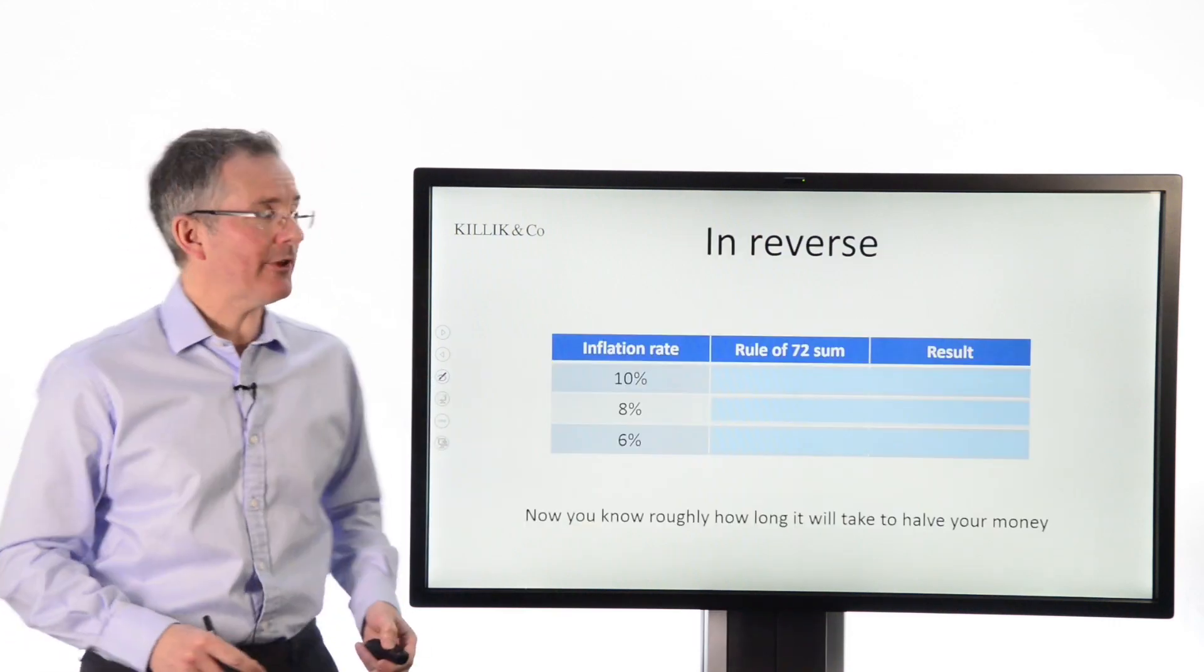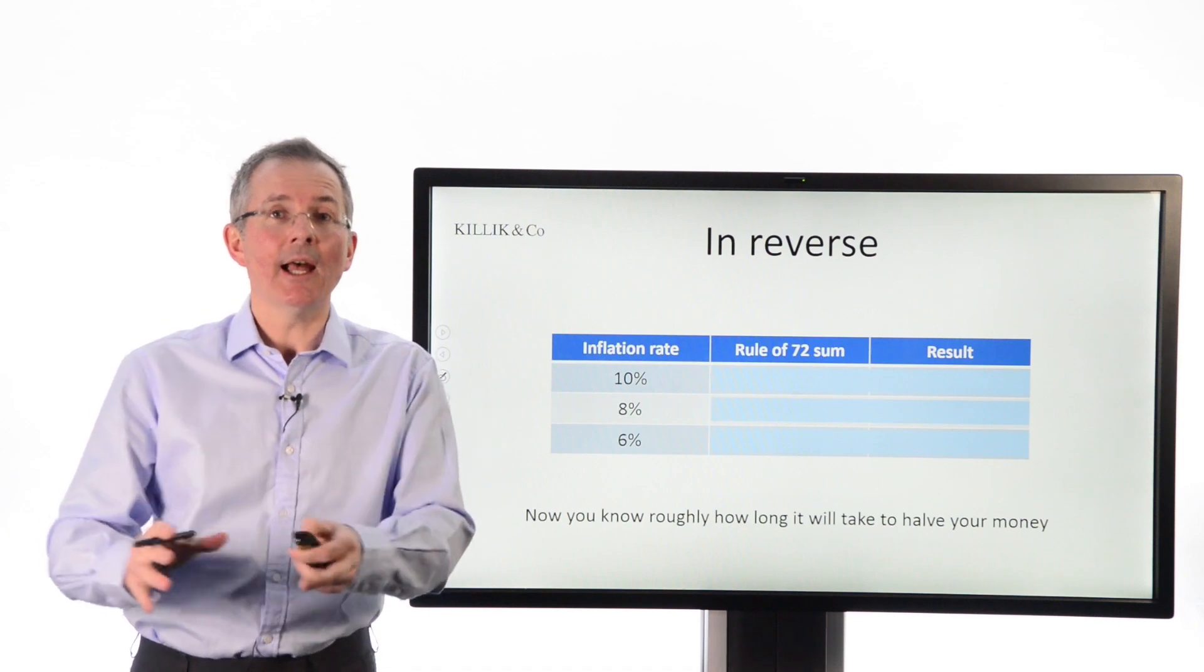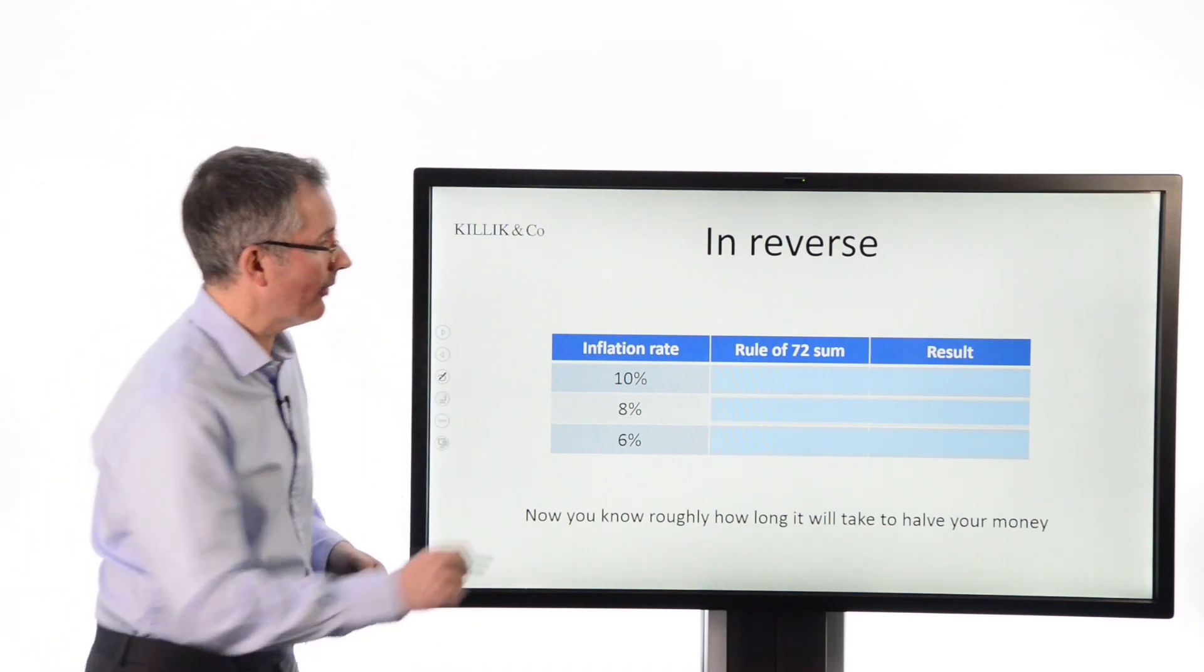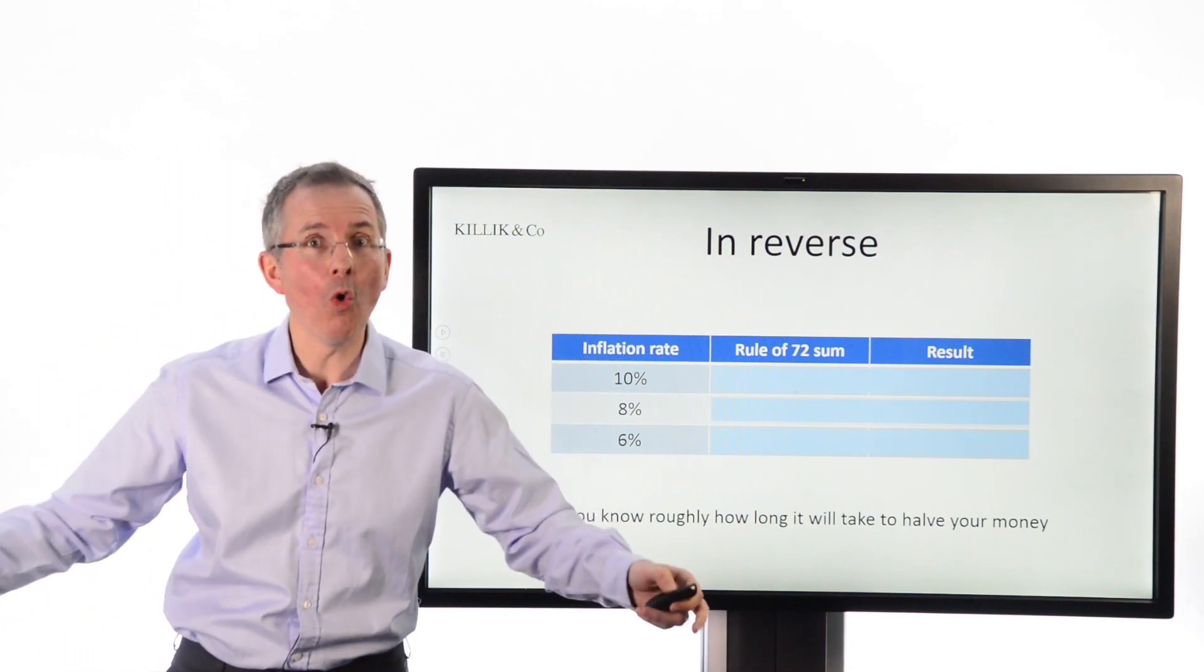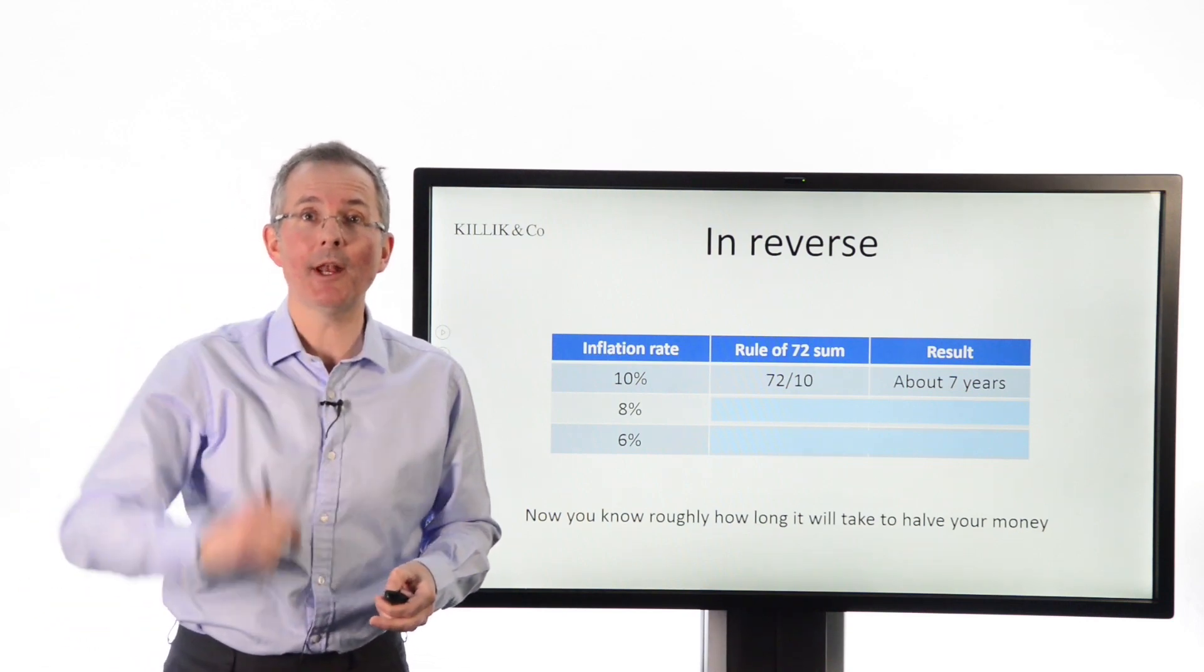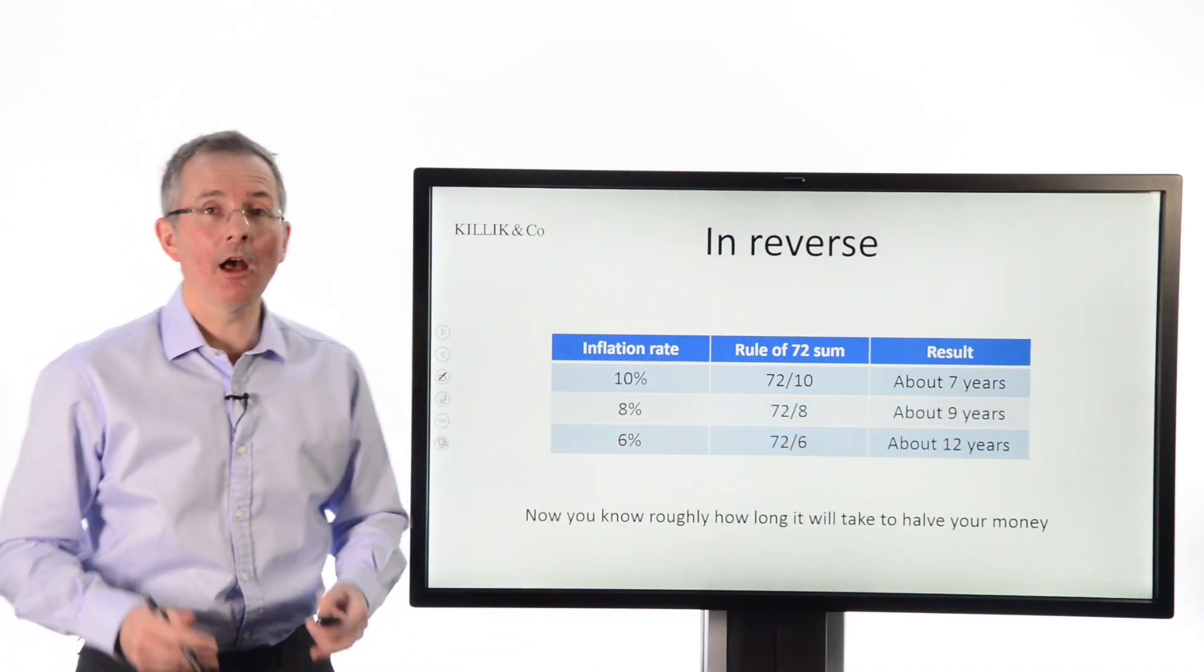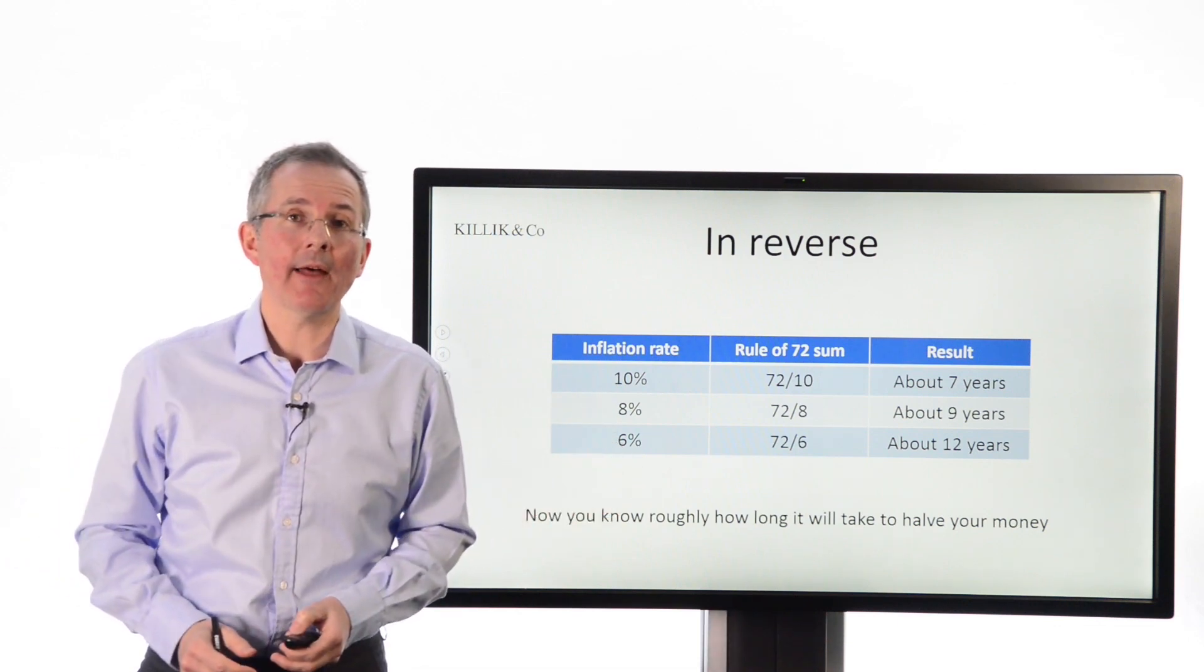Now then, you can reverse it. You can also say, if I assume a certain inflation rate, how long will it take to halve my money at those inflation rates? Well, an inflation rate of 10%, and we have had that in the UK in the past, albeit not now, the rule of 72 says about seven years. Same principle: 72 divided by the number gives you the answer. At 8%, about nine years. And at 6%, about 12 years. So it can be turned on its head and used like that.